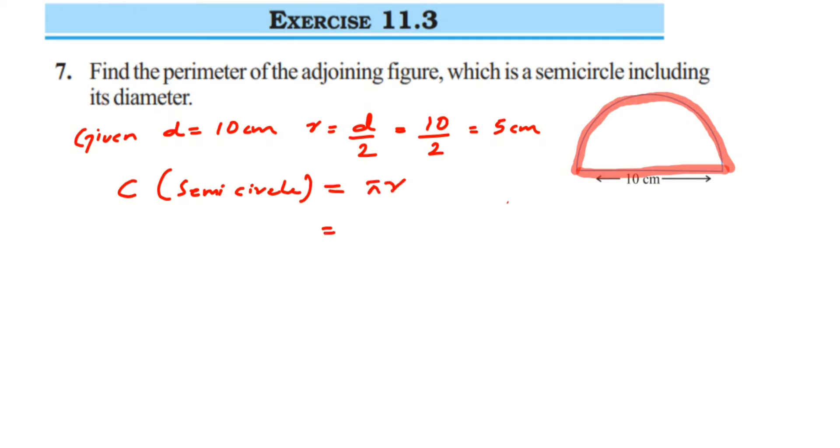C is equal to πr. So this is equal to - the π value is 22 by 7 (we can also take 3.14) - so 22 by 7 multiplied by radius, which is 5. So this is equal to 110 divided by 7.